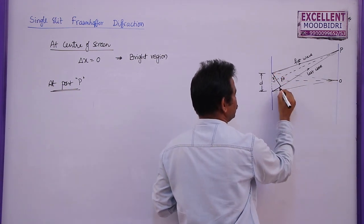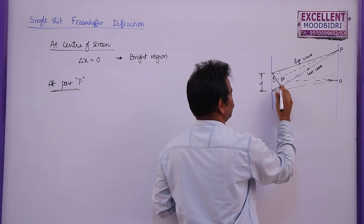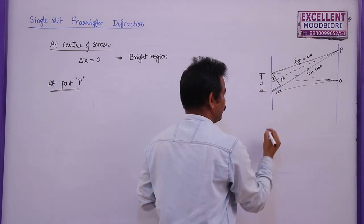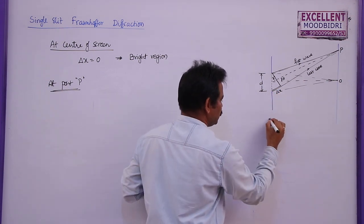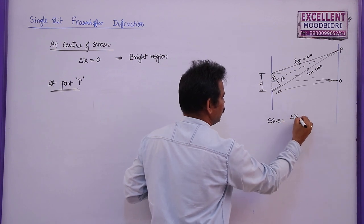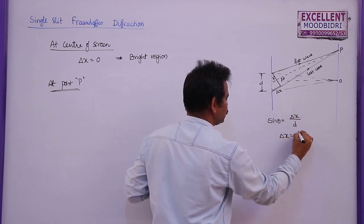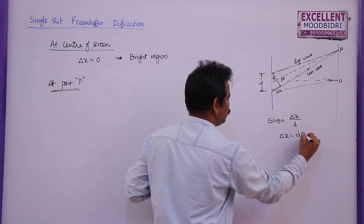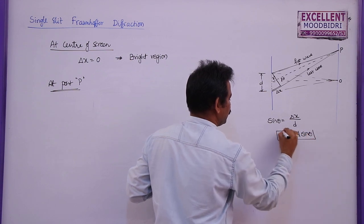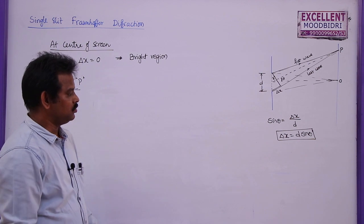The path difference between these two is delta x. We know that sin θ = delta x / d, so delta x = d sin θ. This is the path difference between the first and last wave reaching point P.